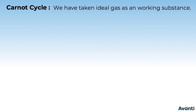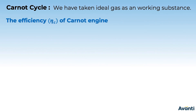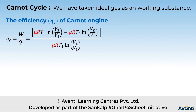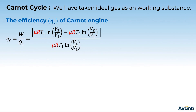Now let's derive the efficiency of the Carnot cycle. For the Carnot engine, efficiency η_c = W/Q1. The work done expression we derived earlier was μRT1 ln(V2/V1) − μRT2 ln(V3/V4), and Q1 = W1 = μRT1 ln(V2/V1). Cancelling μR from numerator and denominator, we get W/Q1 = [T1 ln(V2/V1) − T2 ln(V3/V4)] / [T1 ln(V2/V1)].